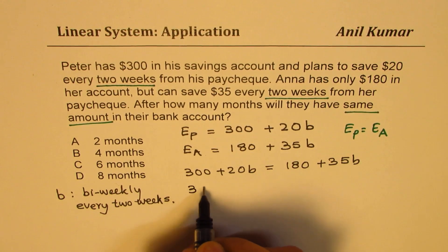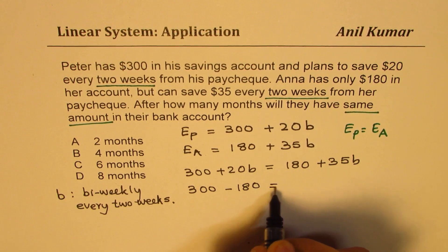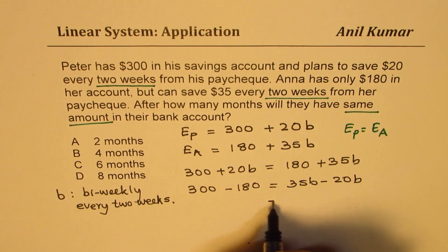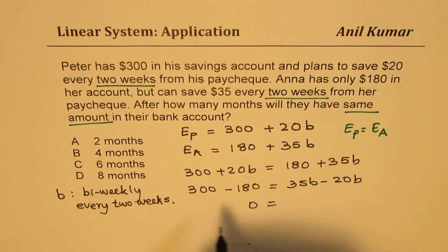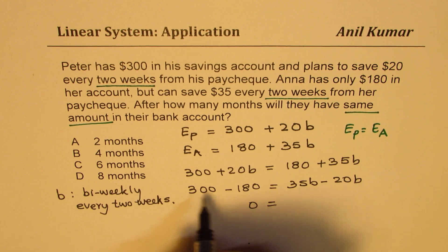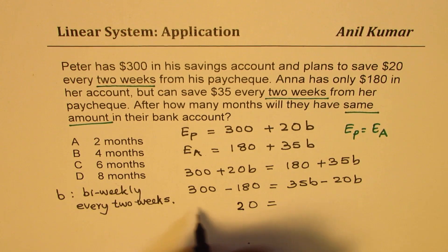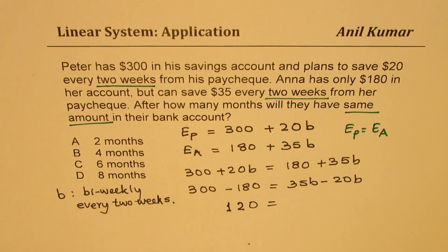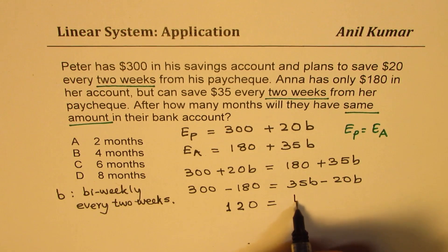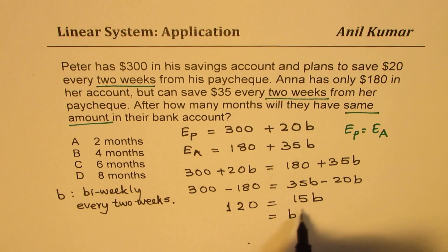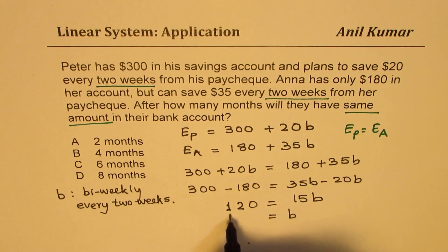Bring constants on one side and variables on the other side. We get 120 on the constants side and 15B on the variable side. So the number of bi-weeklies will be 120 divided by 15.